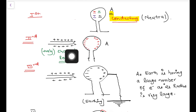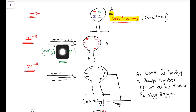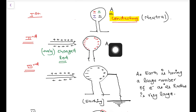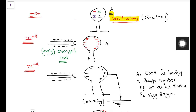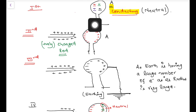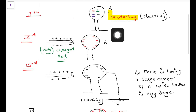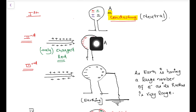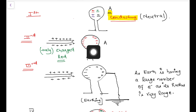I will take a positively charged rod and place this positively charged rod at some distance from this neutral body. I am not touching this positively charged body with this neutral body. What I see is that all the negative charges come to the near surface and all the positive charges go to the far surface. This happens because the body is conducting in nature, and in a conducting body, charges can move from one place to another. But if this body is insulating, then charge separation will not happen.